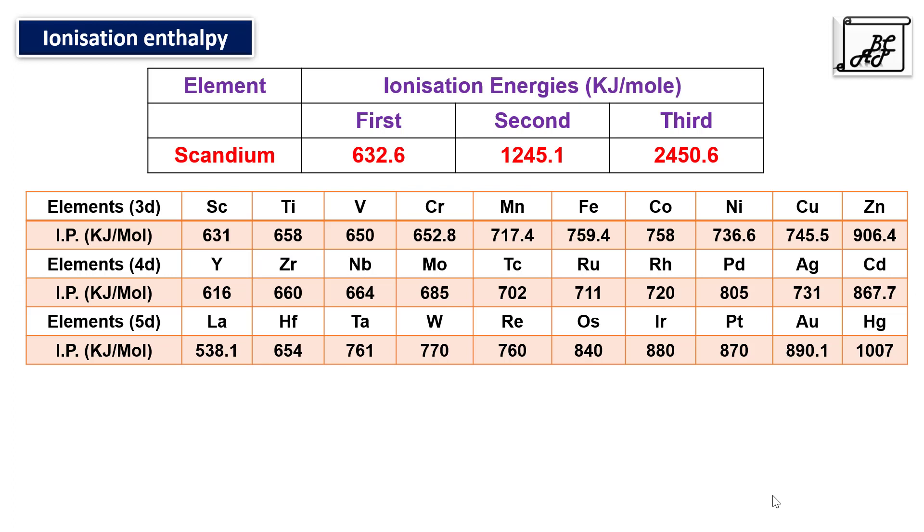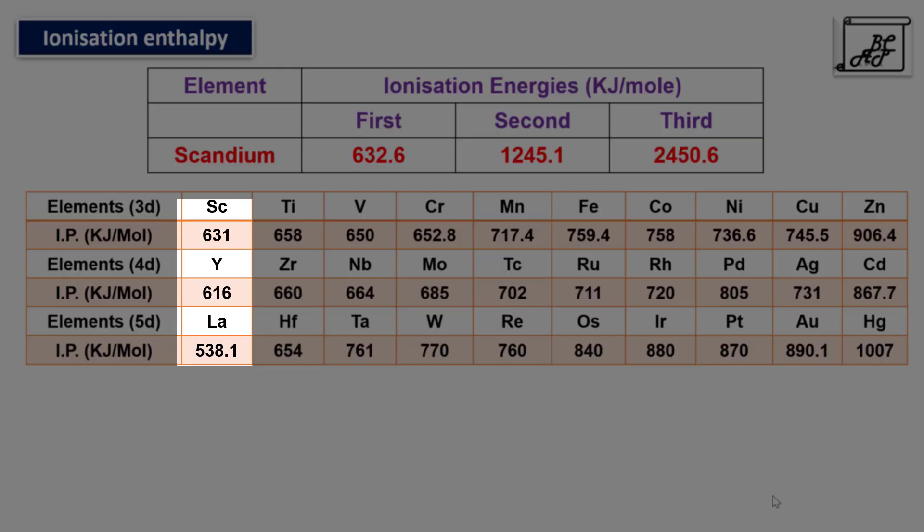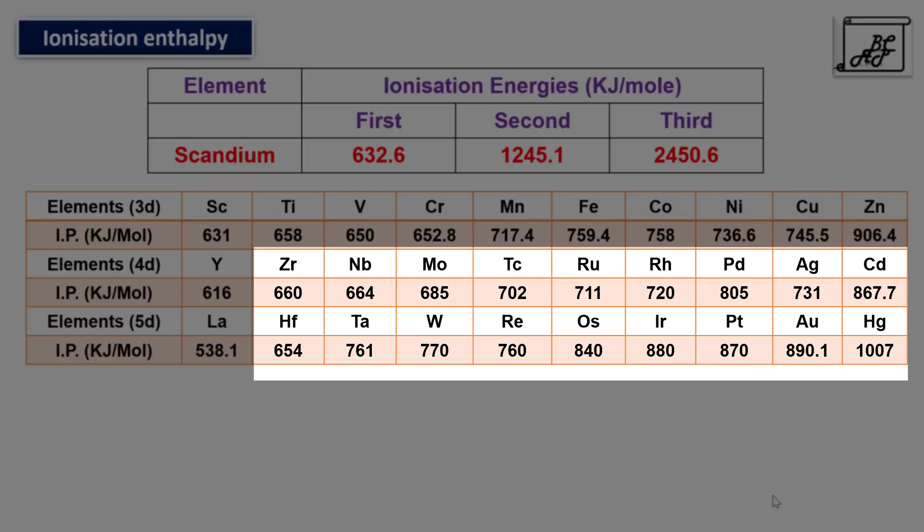When we move from top to bottom, atomic size increases, so ionization enthalpy should decrease. In group 3B, ionization values do decrease from scandium to yttrium to lanthanum. However, in most remaining groups, ionization enthalpy increases in the same direction, because elements following lanthanum — from cerium to lutetium in the inner transition series — have completely filled 4f orbitals that cannot shield the nucleus effectively. Due to this poor shielding by 4f electrons, elements after lanthanum in the third transition series have greater effective nuclear charge acting on the ns2 electrons, giving them higher ionization energies than corresponding elements in the first and second transition series.